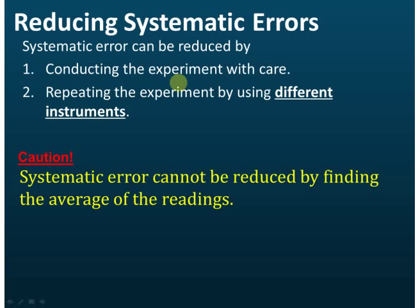We have discussed three examples of systematic error, and now we need to know how to reduce the error. Systematic error can be reduced by conducting the experiment with care — do it carefully.